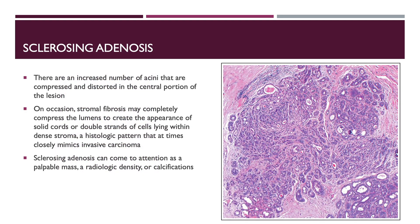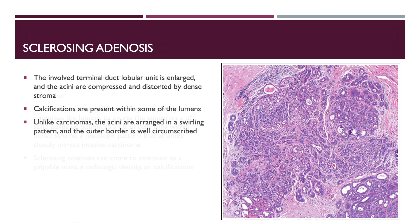Sclerosing adenosis: in this condition, there are an increased number of acini that are compressed and distorted in the central portion of the lesion. On occasion, stromal fibrosis may completely compress the lumens to create the appearance of solid cords or double strands of cells lying within dense stroma, a histologic pattern that at times closely mimics invasive carcinoma. Sclerosing adenosis can come to attention as a palpable mass, a radiologic density, or calcifications. The involved terminal duct lobular unit is enlarged and the acini are compressed and distorted by dense stroma. Unlike carcinomas, however, the acini are arranged in a swirling pattern and the outer border is well circumscribed.